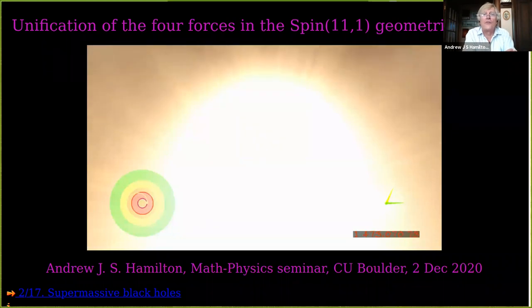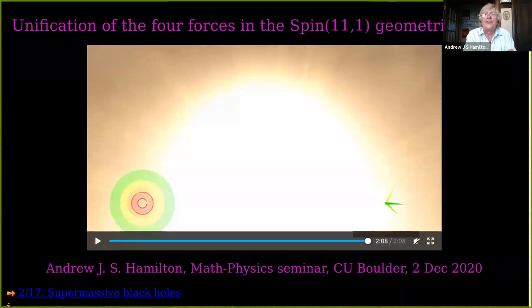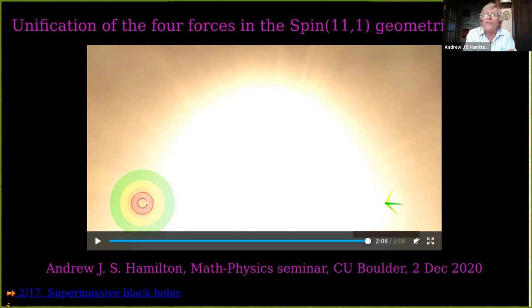In 1968, Roger Penrose pointed out that an infaller who reaches the inner horizon of a black hole sees the outside universe infinitely blue-shifted and infinitely energetic. Penrose suggested that the concentration of energy at the inner horizon would destabilize it, cutting off the wormhole and white hole and all those other strange phenomena.